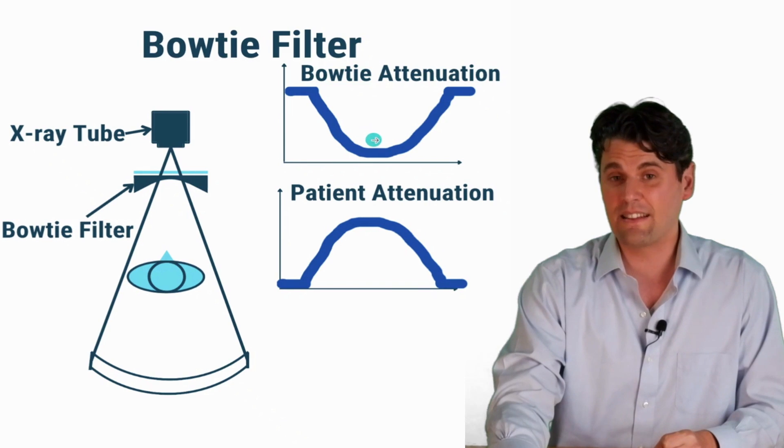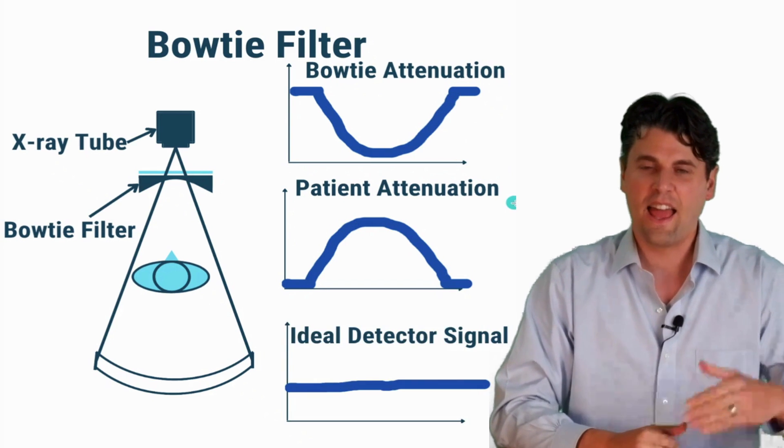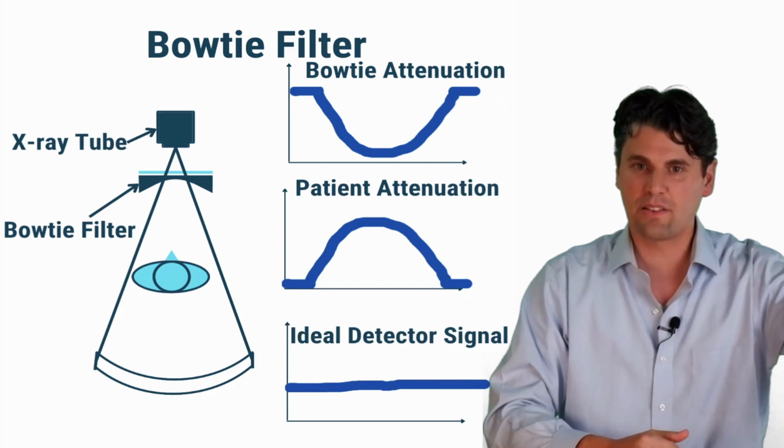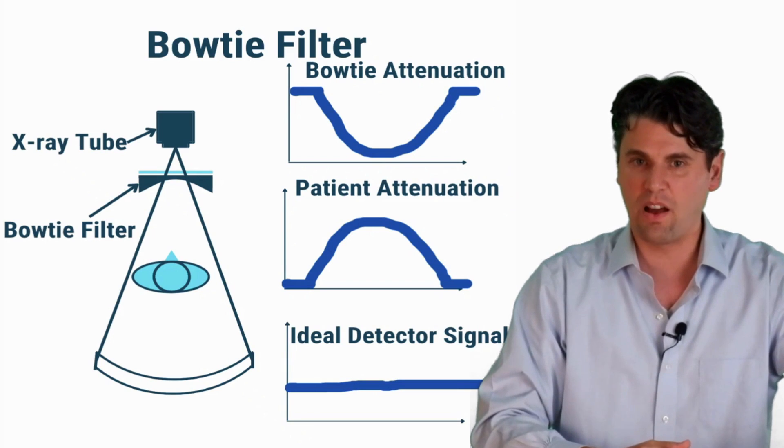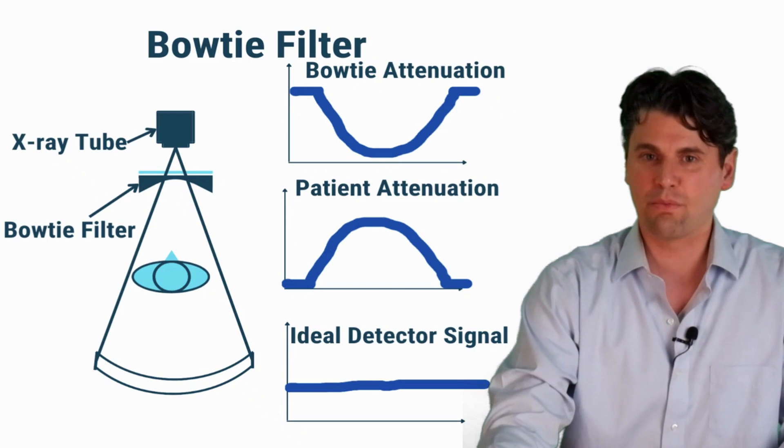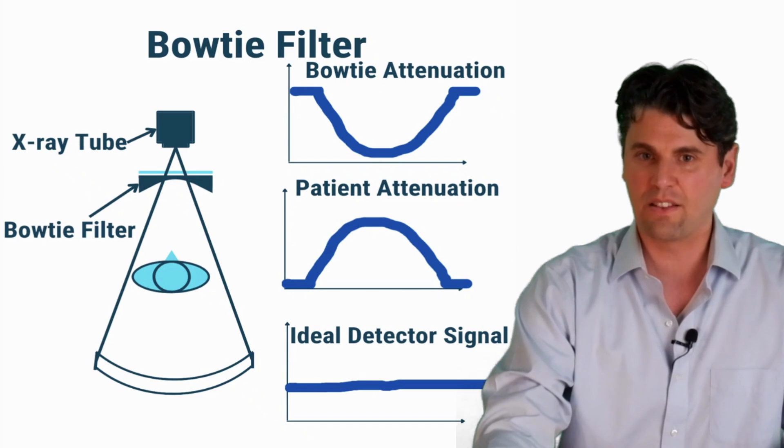So what we often will do is we'll just imagine your body is made up of a cylinder of water and then how would we design a filter to basically have the inverse property of this. So we would like to attenuate the x-rays opposite to the way that your body's going to attenuate the x-rays you would get a bow tie profile that looks something like this. You're going to actually need less attenuation right down the middle and then more attenuation at the outside. The idea is that after the x-rays pass through the bow tie filter and then they pass through the patient themselves that it's actually relatively flat when they get to the detector.